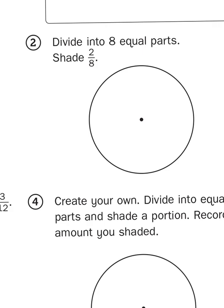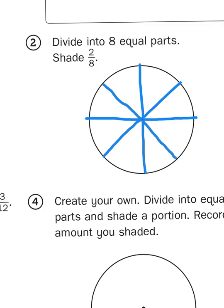To divide this into eight equal parts, I'm going to start out the same way I did with four equal parts. Divide the circle in half, then cut those halves, each in half. And now I have four quarters, or four-fourths. Then I'm going to cut each of those fourths in half again, or divide them into two parts, creating a total of eight parts.